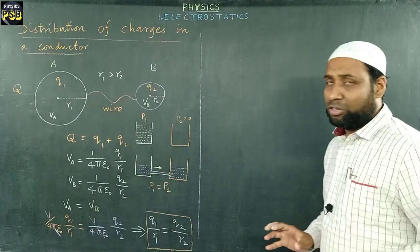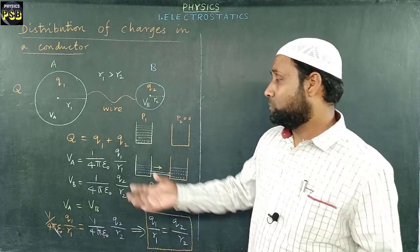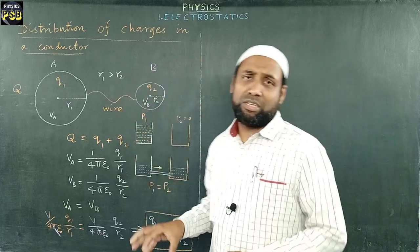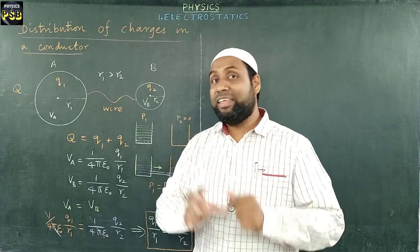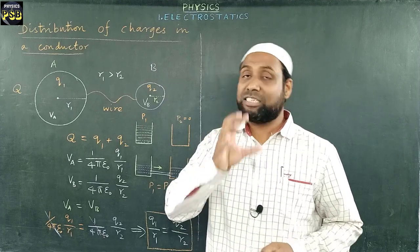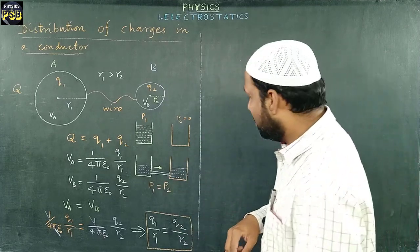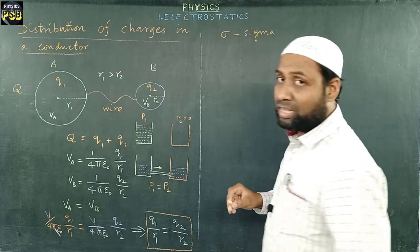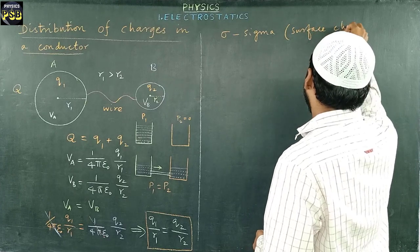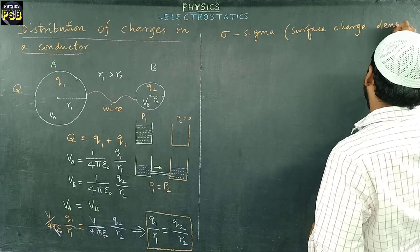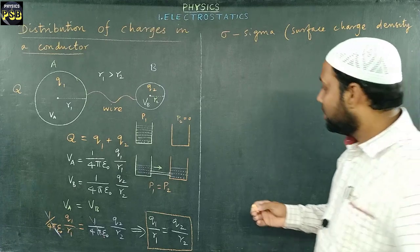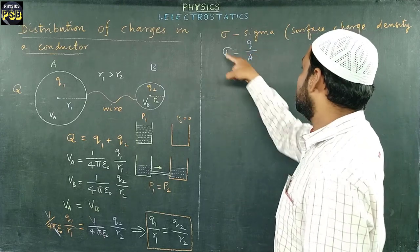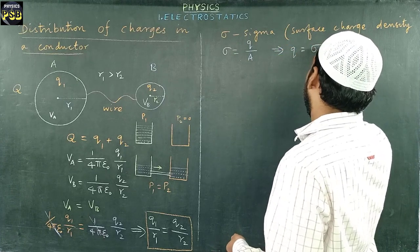The number of charges present in an object per unit area is referred to as charge density — called surface charge density, represented by the letter sigma (σ). Surface charge density is charge q per unit area, so q equals σ times A.